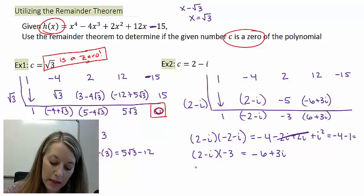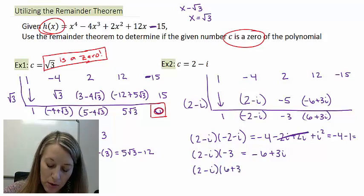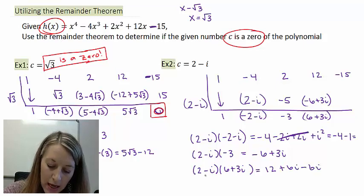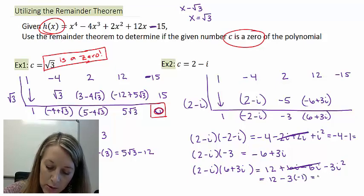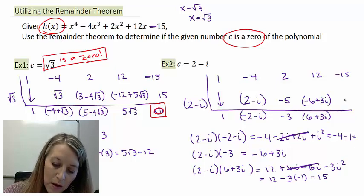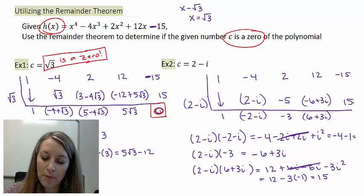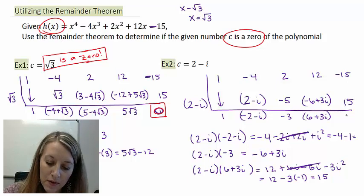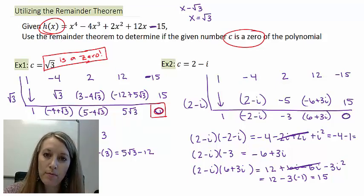So now I need to multiply these. (2 - i) times (6 + 3i). First, 2 times 6 gives me 12. Outside gives me positive 6i. Inside gives me -6i. And last gives me -3i². My 6i's cancel out. 12 minus 3i² gives me a -1. So this gives me 12 plus 3, which is 15. When I substitute that up there and combine these, -15 plus 15, that gives me a remainder of 0.